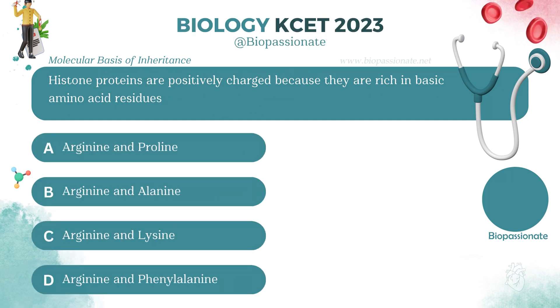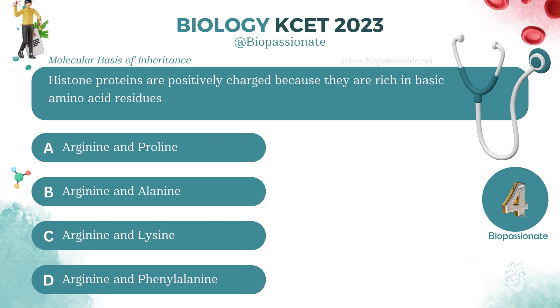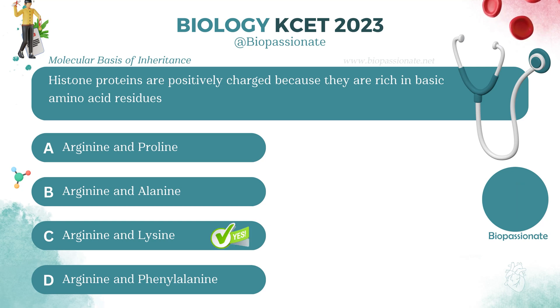Histone proteins are positively charged because they are rich in basic amino acid residues. Which amino acids specifically? Answer: Arginine and lysine.